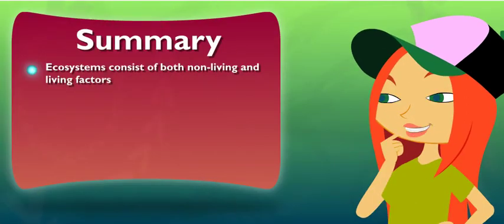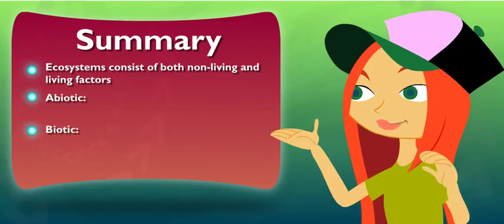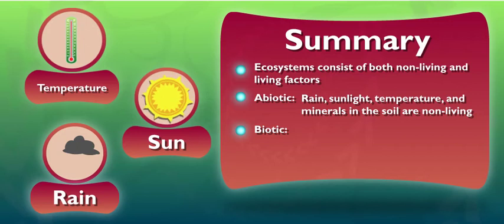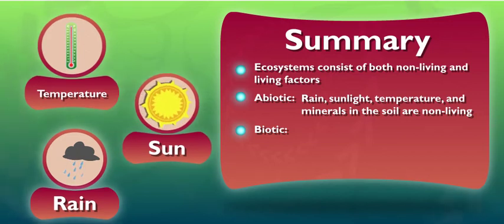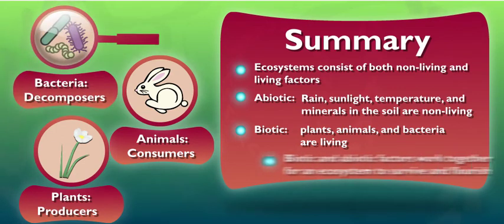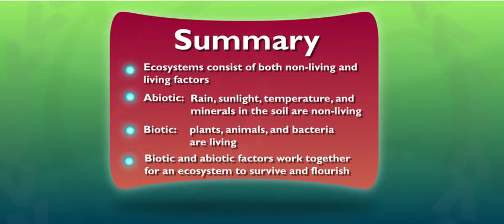I guess the ecosystem is sort of a symphony of parts — abiotic and biotic. Rain, sunlight, and temperature are all abiotic, or non-living, factors that help an ecosystem survive. Plants, animals, and bacteria are all living, or biotic, factors. Biotic and abiotic factors work together for an ecosystem to survive and flourish.